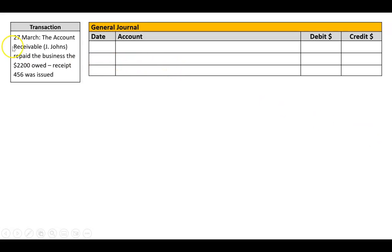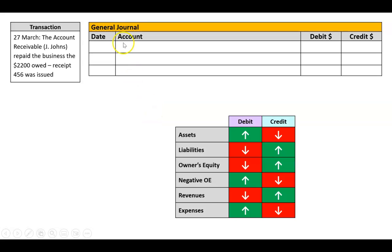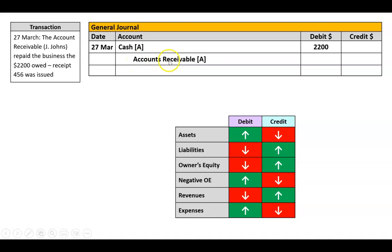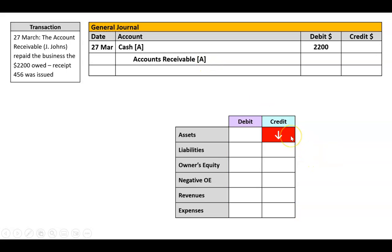So that was a sale — pretty tricky because there were five things. Other things won't be as difficult. On the 27th of March, accounts receivable J. Johns repaid the business the $2,200 owed. Receipt 456 was issued. We do the date — 27th. Cash is affected: it's an asset going up because I've got more money, so that would be a debit. The other account affected is accounts receivable — also an asset, but the amount owed to me is less, so it's going down, which would be a credit. In the general journal I do a narration: J. Johns repaid the business, document number receipt 456.